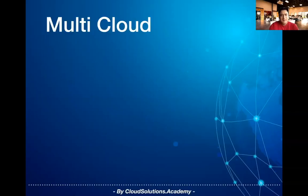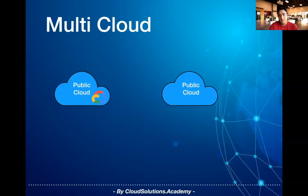A multi-cloud environment is basically a cloud computing environment where cloud applications are running on multiple public clouds. For instance, applications can be running on Google Cloud as well as AWS.